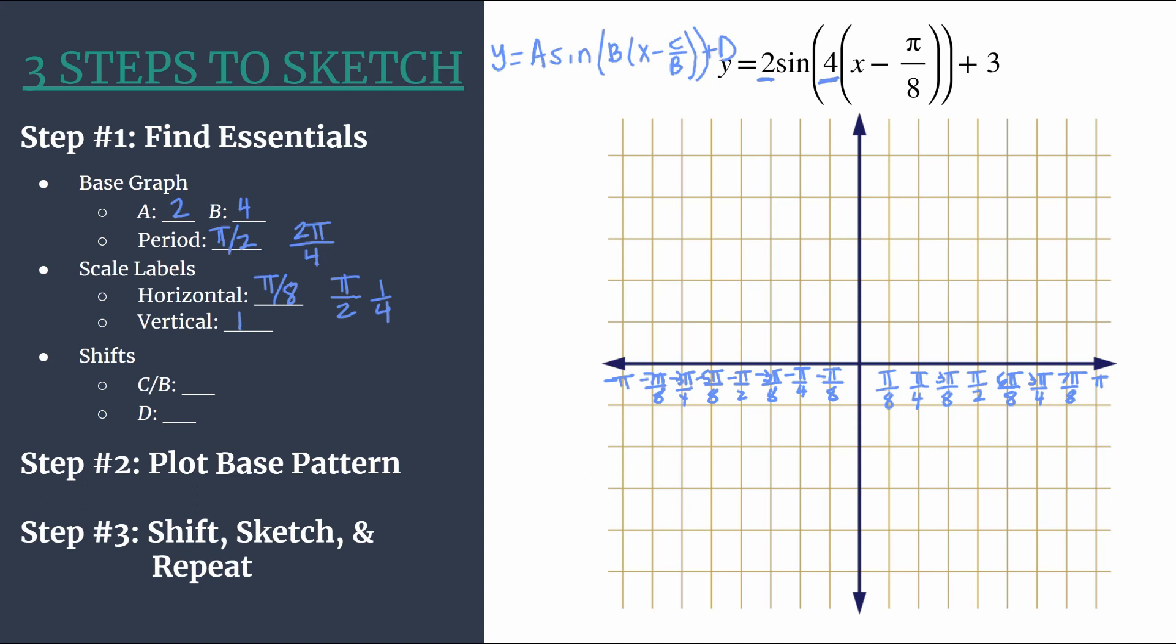And then let's label our vertical axis. So we will just be counting by 1s. Easy enough. 1, 2, 3, 4, 5. Negative 1, negative 2, negative 3, negative 4, negative 5.